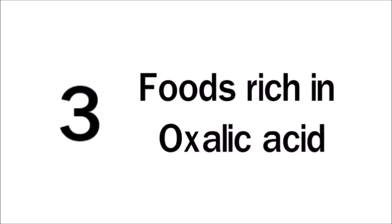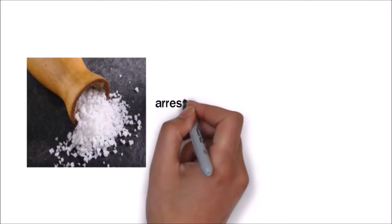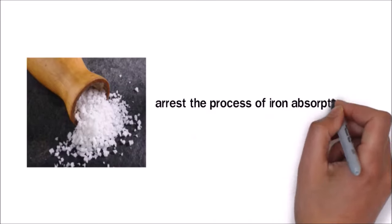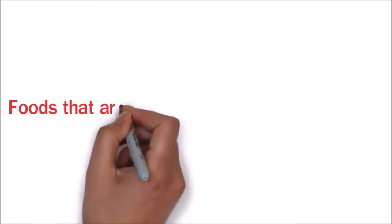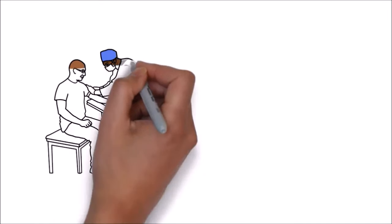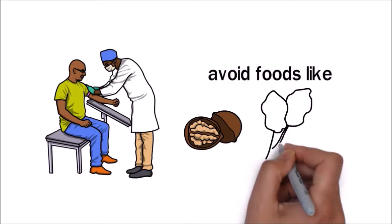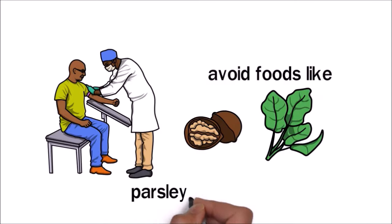Foods rich in oxalic acid. Oxalic acid is another ingredient known to arrest the process of iron absorption in your body. Foods that are rich in oxalic acid can block calcium absorption too. If you are undergoing treatment for anemia, then you should avoid foods like peanuts, spinach, parsley, pecans, or chocolate.